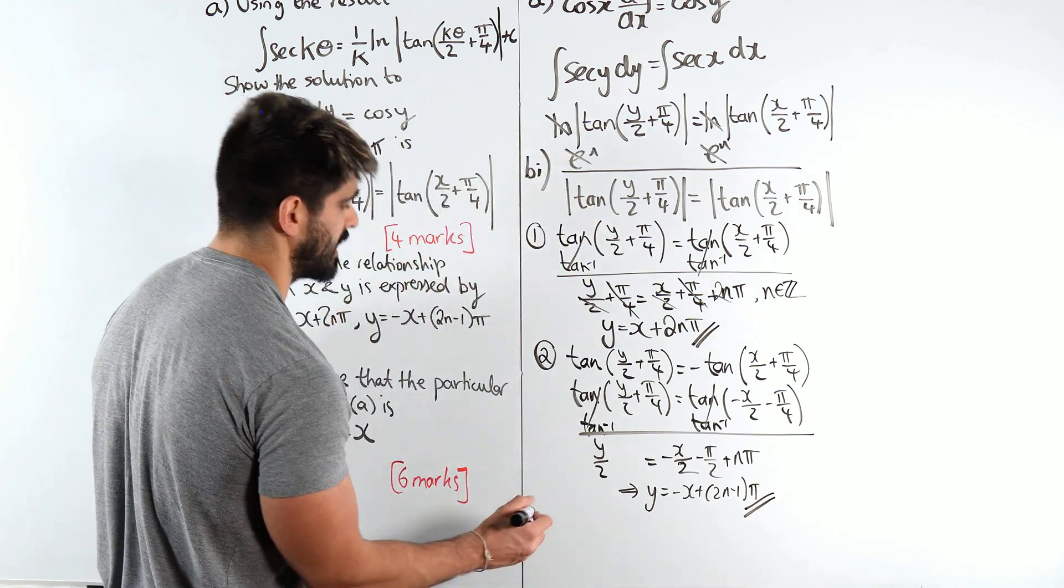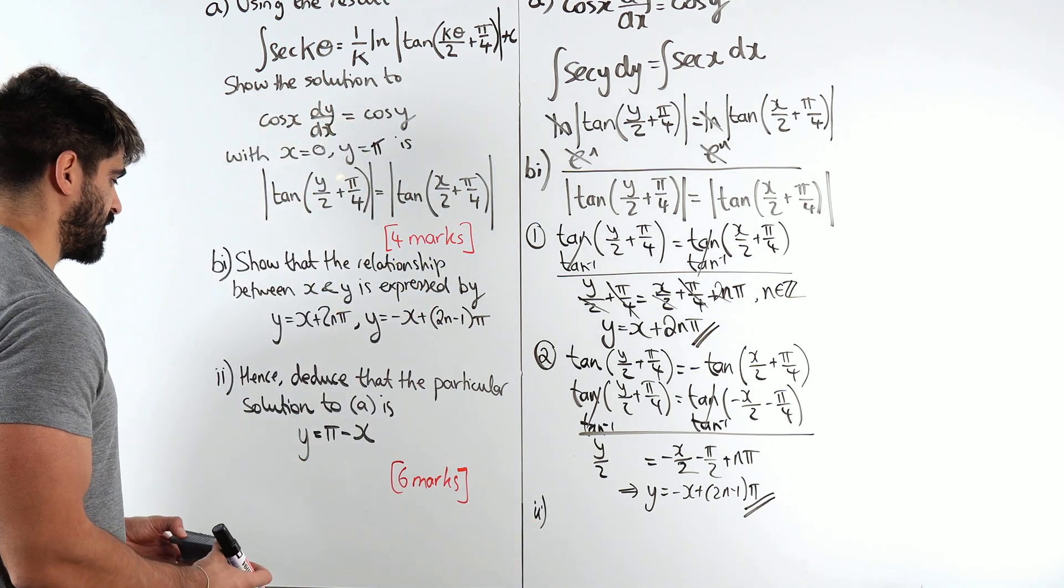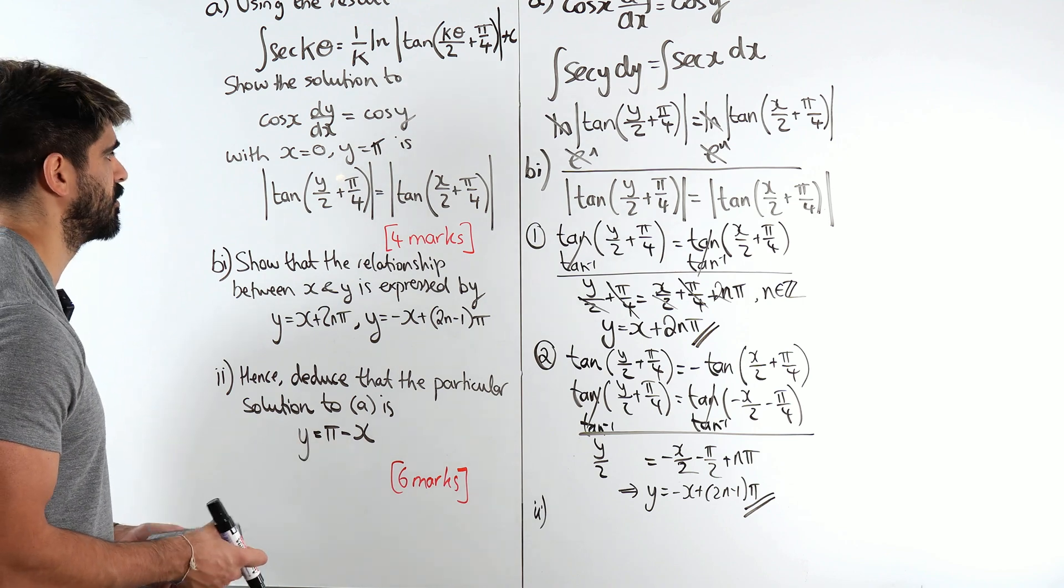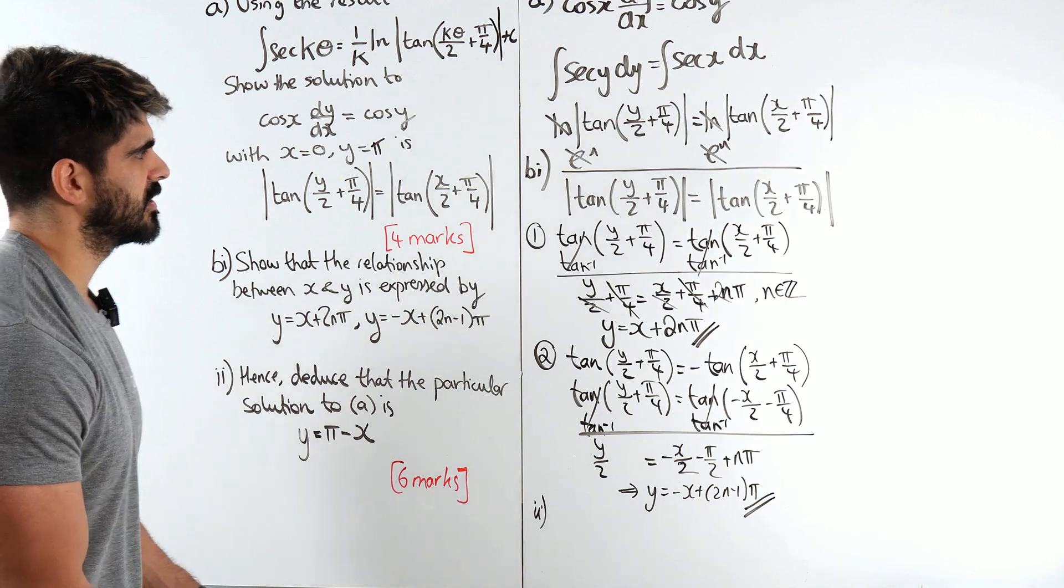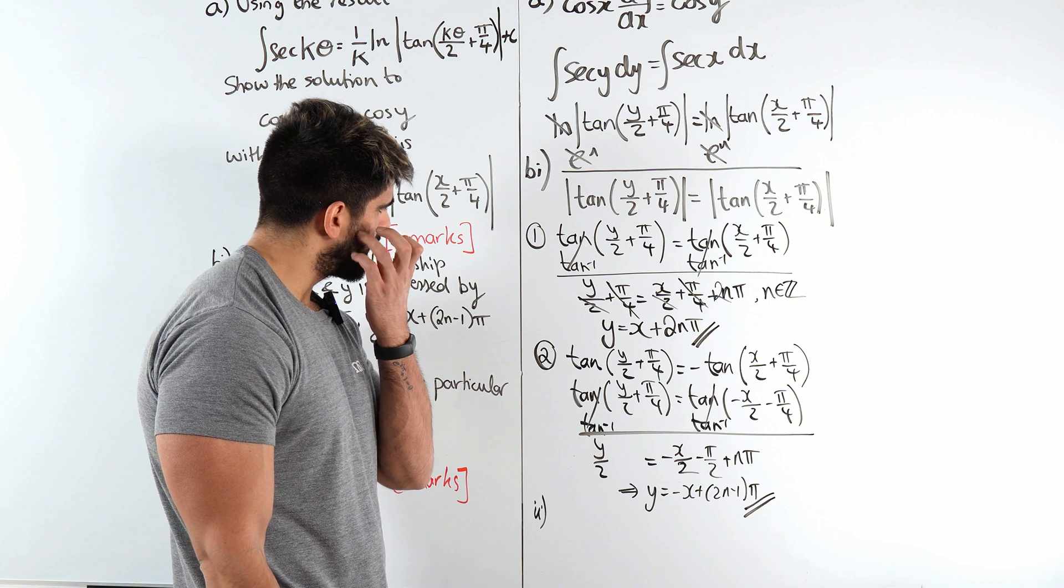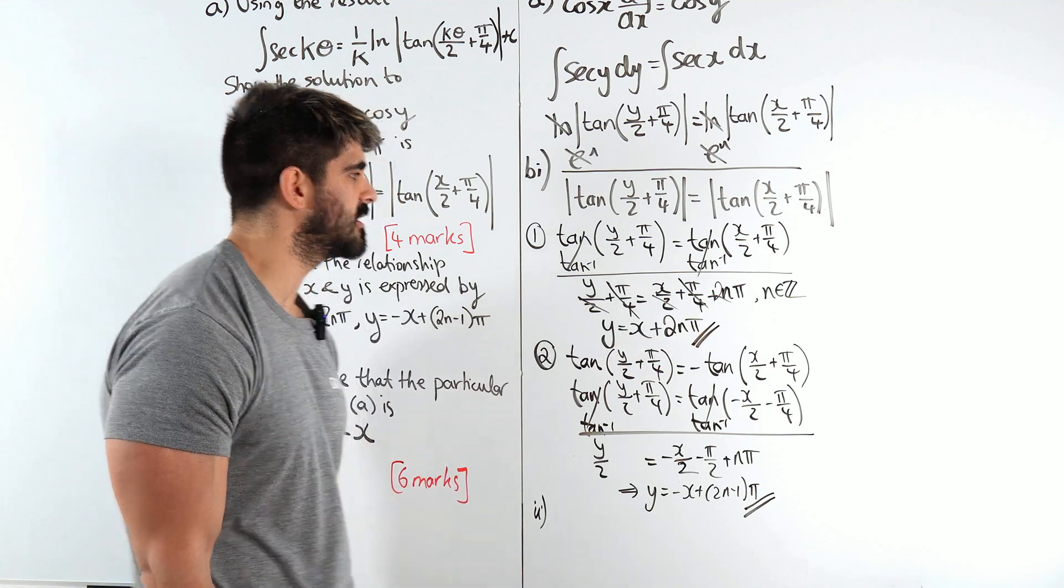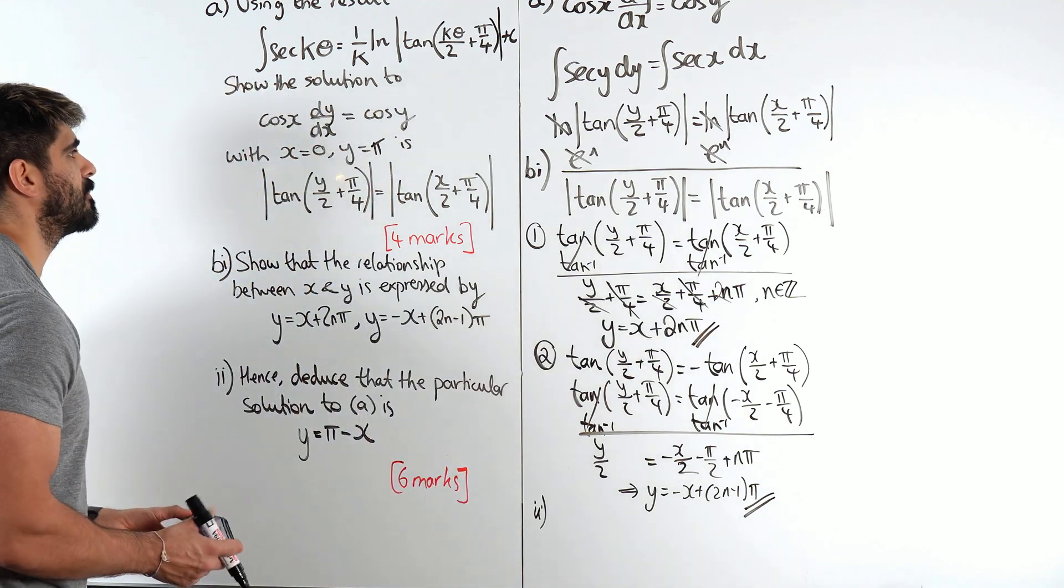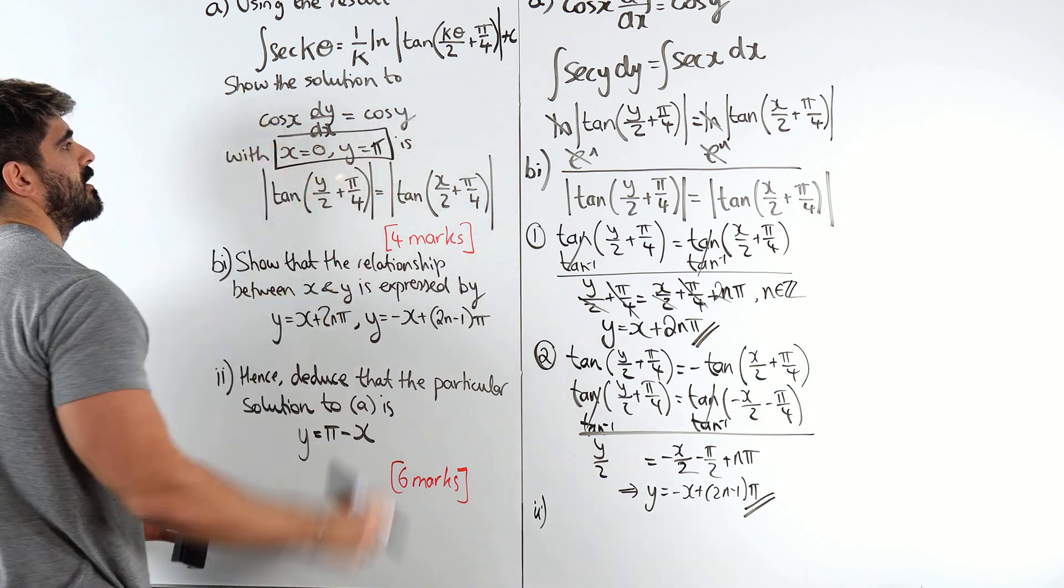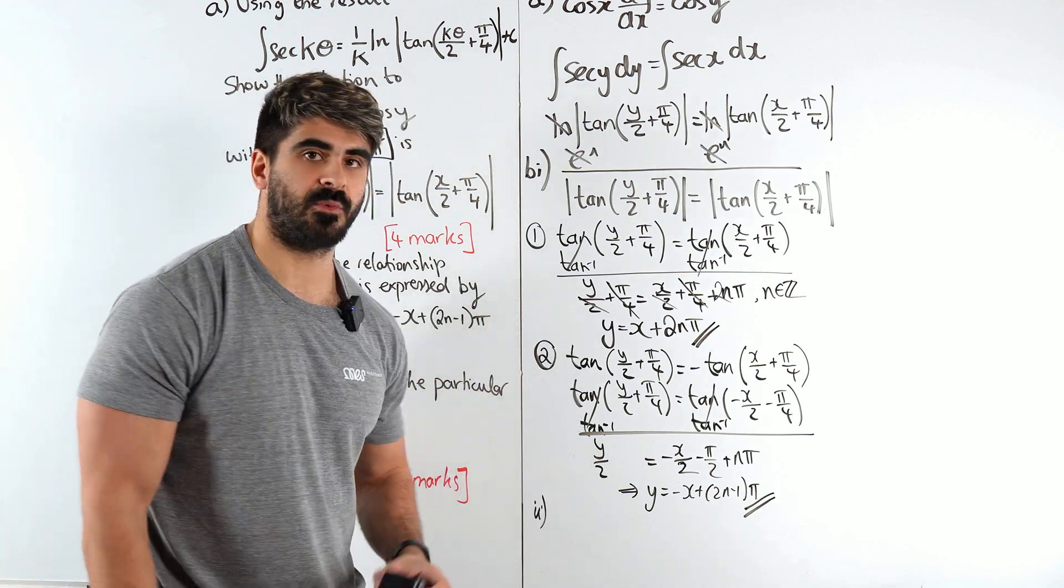Hence deduce that the particular solution to part a is this. Okay, so these are the two possible solutions. Now, these are obviously generic because they're in terms of n where n is an integer. But we can look back at our boundary condition. That boundary condition is going to have to satisfy one of these. Now which one is it going to be?